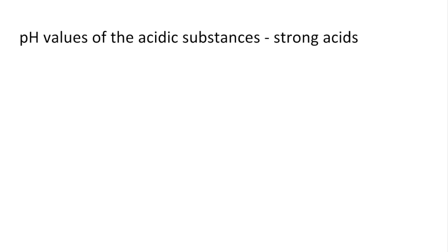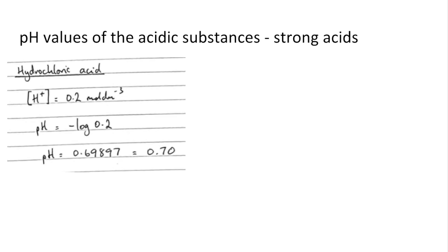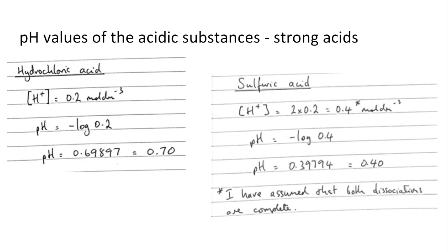We'll look at the strong acids first. So the hydrochloric acid, there's its pH 0.70 and sulfuric acid 0.40. They are fully dissociated and the pH is therefore minus log of the H plus concentration. And you'll notice there for sulfuric acid I've assumed that both of its dissociations are complete.